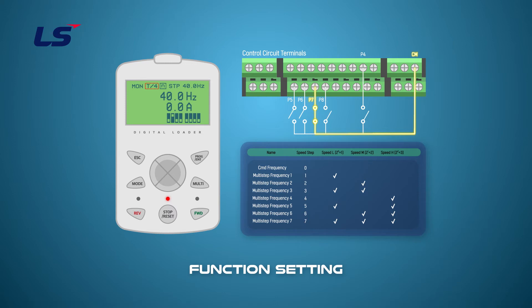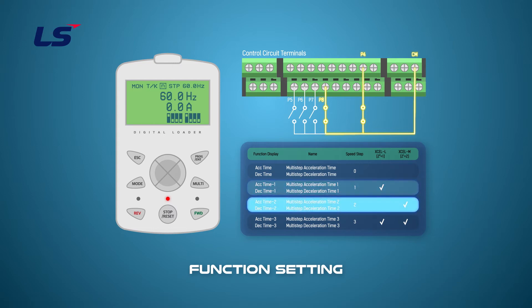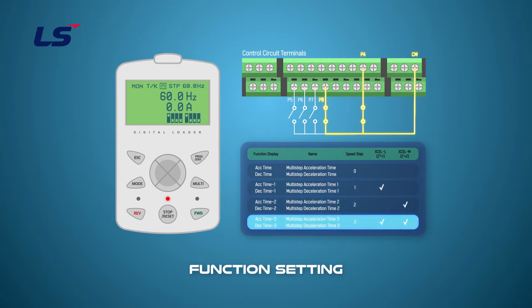Multi-step acceleration-deceleration also operates in the same sequence. Therefore, steps 1, 2, and 3 work by the input combinations of XCEL-L and XCEL-M. The input status of the multi-step acceleration-deceleration is not displayed on the keypad, but you can check the input status through the DI status parameter.